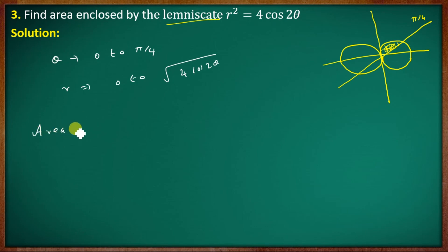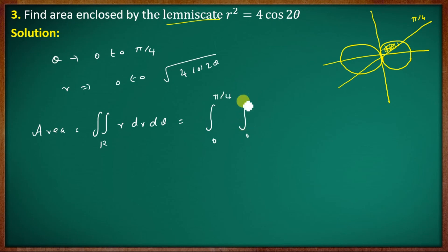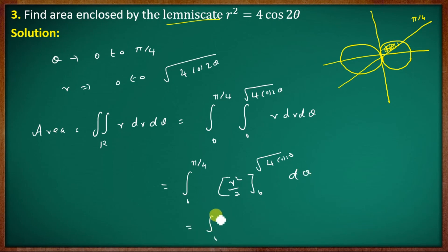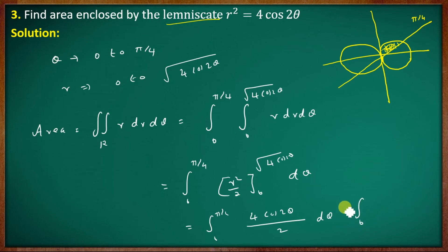Problem 3: find the area enclosed by r² = 4cos2θ. The area equals 4 times the integral from 0 to π/4, and r from 0 to √(4cos2θ), of r dr dθ. Integrating r, we get r²/2 from 0 to √(4cos2θ), which gives 4cos2θ/2 = 2cos2θ.